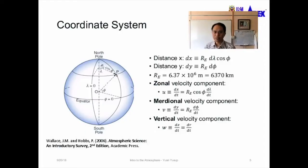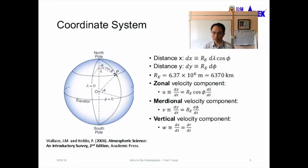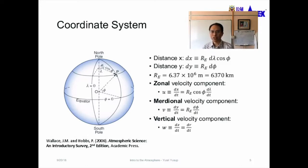The coordinate system we'll be using for this course is based on the spherical shape of the Earth. As you can see in the diagram, we have the north pole at the top, the south pole at the bottom, and the equator in the middle. The symbol phi is for latitude, lambda is for longitude.